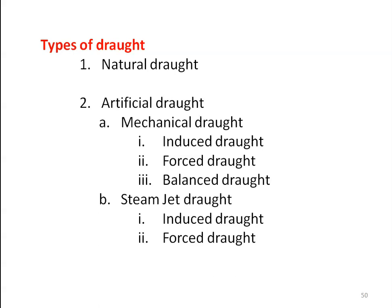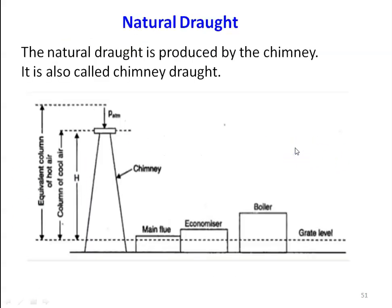We will study the construction arrangement for various types of draughts and their relative advantages. First, natural draught. Natural draught is produced by the chimney — it is also called chimney draught. Looking at the arrangement of the various boiler parts and the chimney, we have the grate level, where burning of the fuel takes place. Air flows through the boiler, economizer, and the main flow passage and then to the chimney. There is a pressure difference between the atmosphere and the column of hot gases inside the chimney, and the flow of gas is created by this temperature difference.